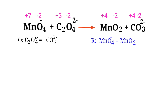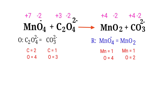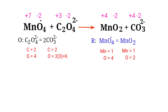Now balance the number of atoms in the two half reactions. In the oxidation half reaction, to balance the carbon atoms, we need to put a coefficient of 2 in front of CO3 2 minus. The carbon atoms are now balanced. Next, balance the oxygen atoms by producing water molecules.